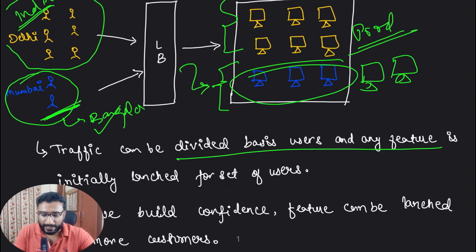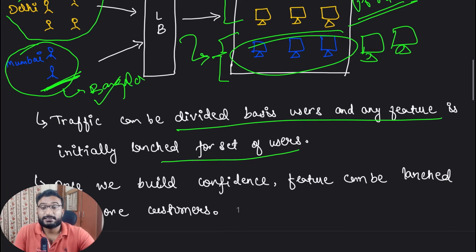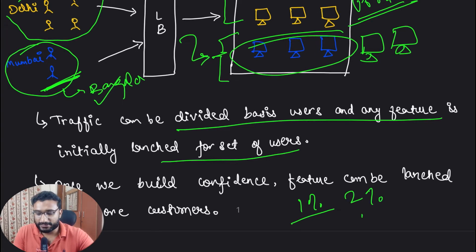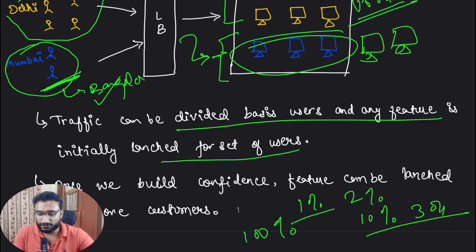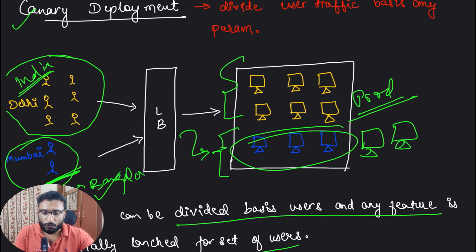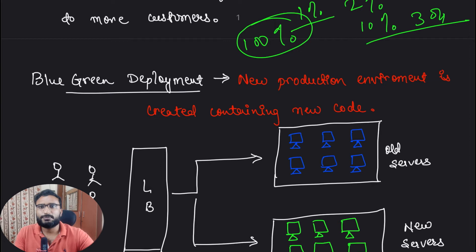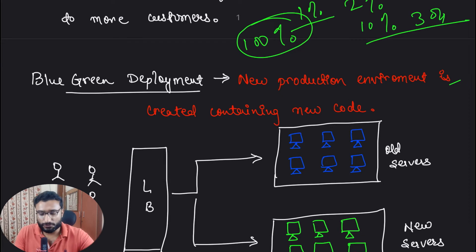So you divide the traffic, launch for a specific set of users, and once you build confidence that everything is right, you roll out to more users. You go from 1% users to 2%, then 10%, then 30%, and eventually 100% of users. At that point, your old code is replaced by the new code and you have the complete system running on the new code. This is what we mean by Canary deployment — step by step, removing old servers and replacing with new ones.